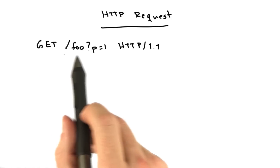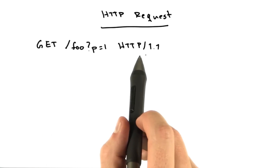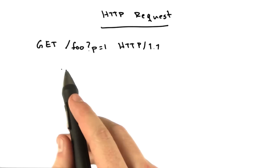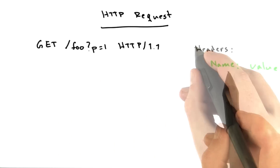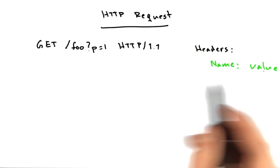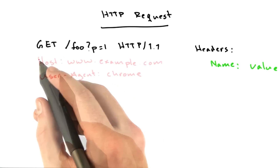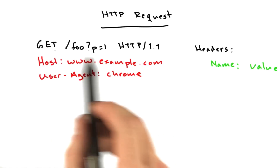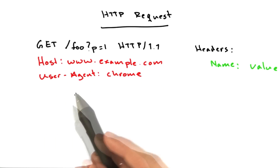We had a request line that looks something like this. It is followed by a number of headers. Headers have this format: name, colon, space, value. Let's add some headers. When you make a request, all of this is sent at once — the request line followed by a number of headers.